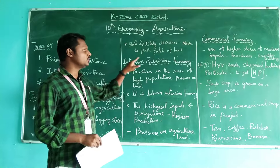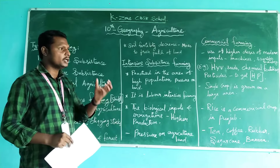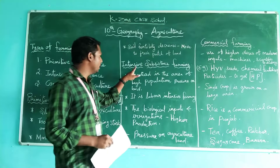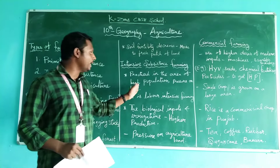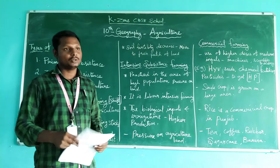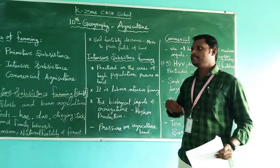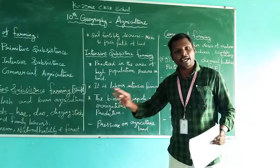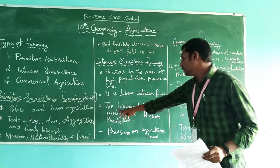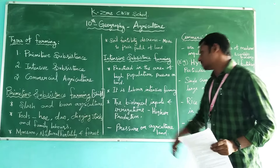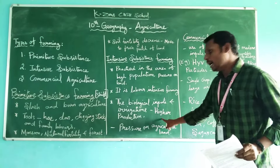The next type is intensive subsistence farming. The intention of this farming is to get high yield. This kind of farming method is practiced in areas of high population pressure on the land. It is a labor-intensive farming that depends upon labor. There is no machinery or scientific invention involved — biological inputs and irrigation are used to get higher production.